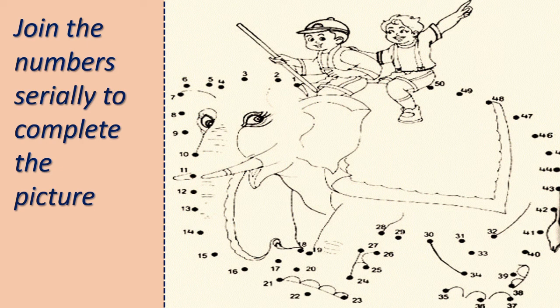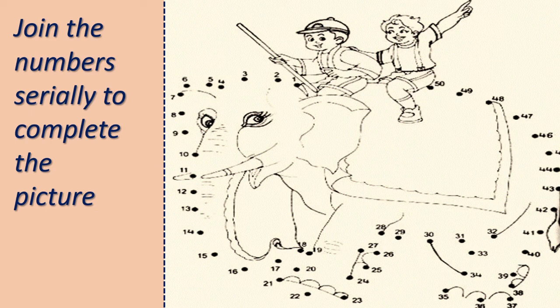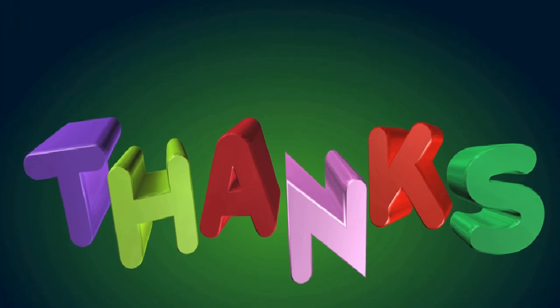See here — join the numbers serially to complete the picture. You have to join the numbers: draw a line from one, then two, three, four, five, six, like this. You have to follow the serial order and you will get a beautiful picture of one huge animal that you have to identify. Then you can ride on this animal! Children, please try to do the homework and also open your textbook and go through the exercise.